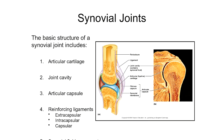Synovial fluid is really important to joint health. It actually acts similarly to blood, because joints don't have a great blood supply. Nutrients and oxygen get into the synovial fluid, and as it circulates through the joint, it distributes those nutrients and oxygen to the tissues within the joint.